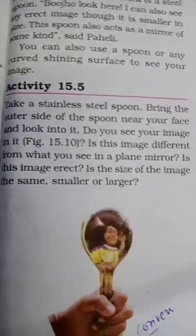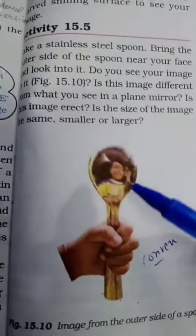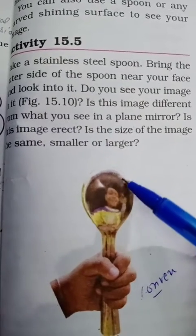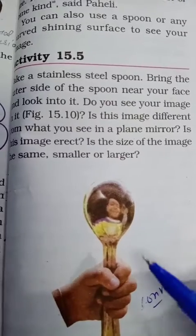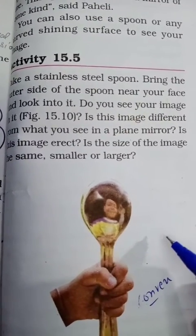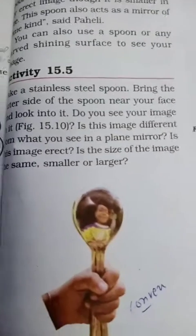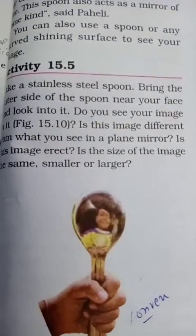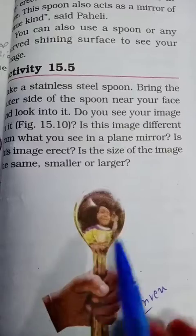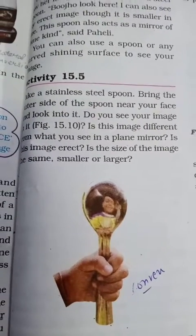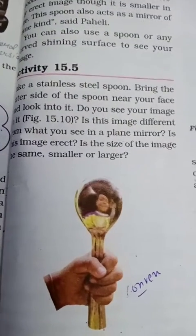Activity 15.5: Take a stainless steel spoon. Bring the outer side of the spoon near your face and look into it. Do you see your image? Yes. Is this image different from what you see in a plane mirror? Is this image erect? You will see that the image is erect — your head appears on top, just as you are. But the size of the image is smaller compared to what you see in a plane mirror.